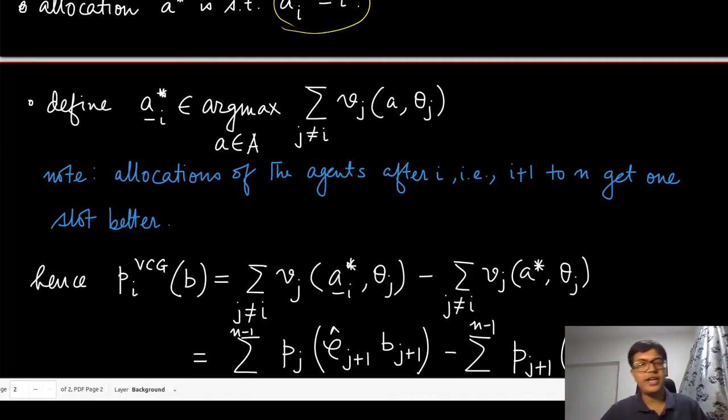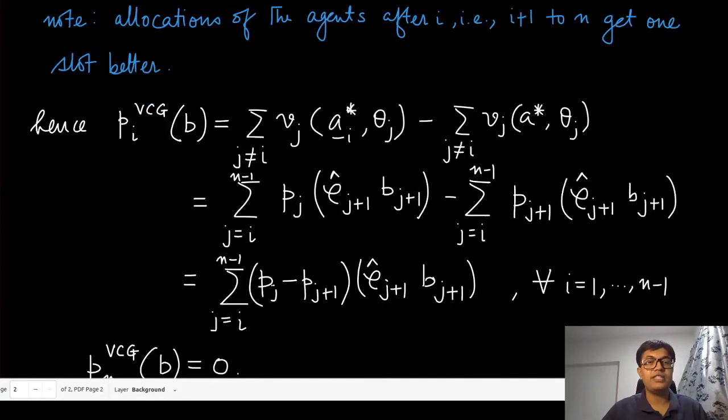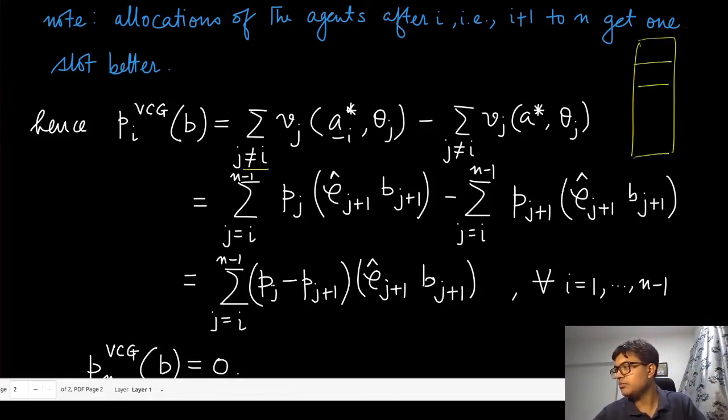We can write down the P_i^VCG, the payment under this VCG mechanism in the following way. As before we have all this j not equal to i's. Imagine in this allocation list, suppose this was the position of agent i.